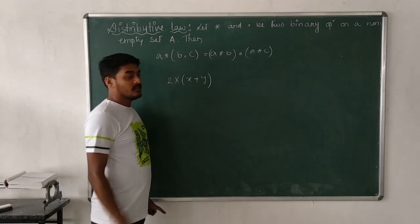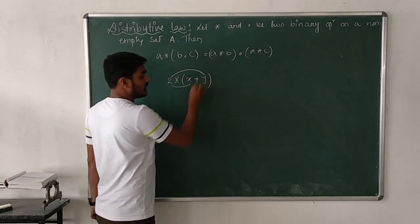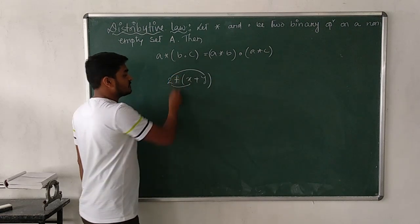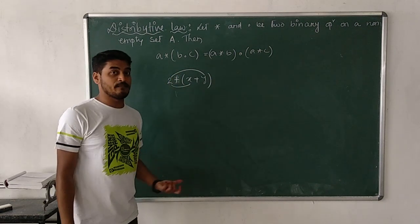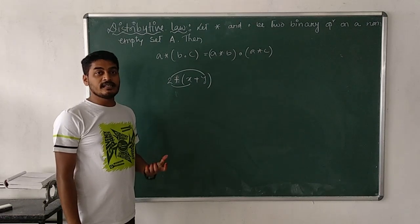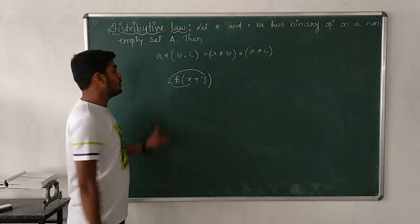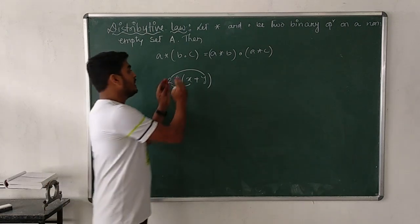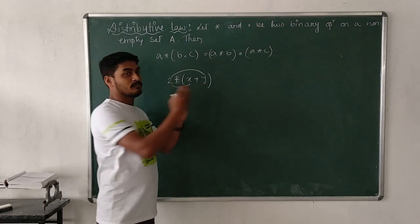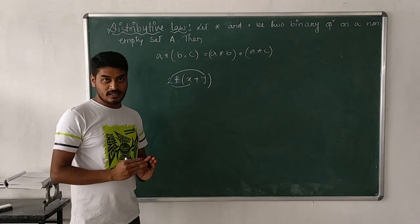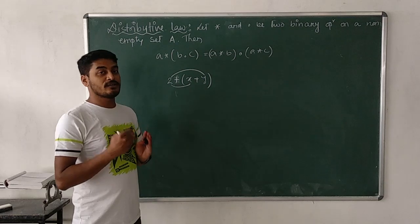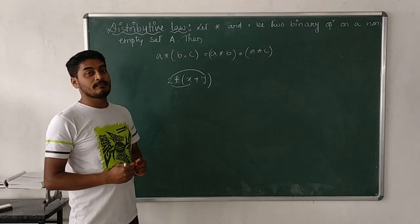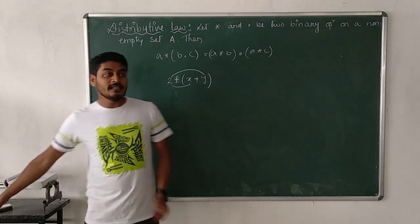You can find the value by distributing 2 to each term inside the bracket: 2×x + 2×y. In the same way, whenever the operation inside the bracket and outside the bracket are the same, you apply the associative property. If they are different, you apply the distributive property.